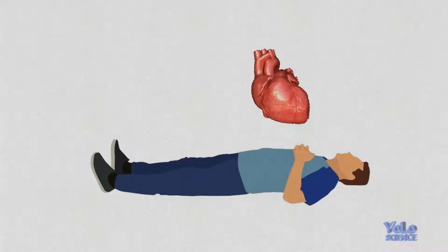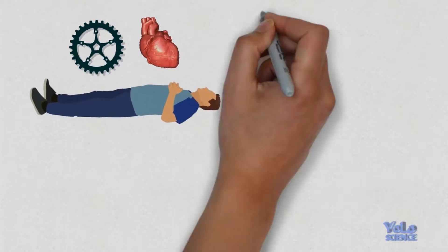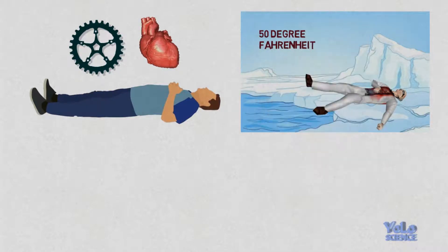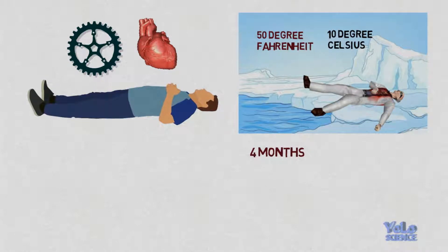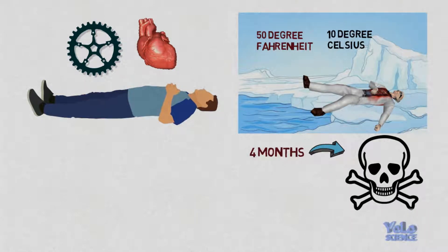Death begins when the heart stops. But even then, there is a long process. You will be surprised to know that if a dead body is kept at 50 degrees Fahrenheit or 10 degrees Celsius, it will only take 4 months to completely disintegrate. And then, only the bones will be left.